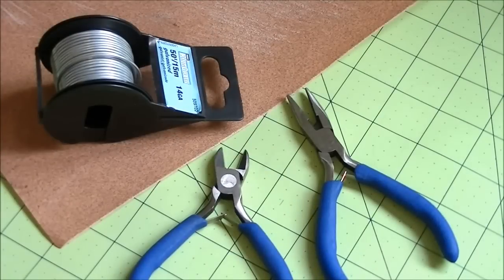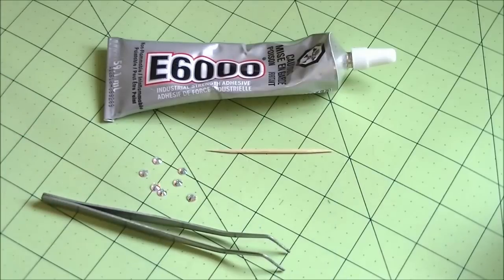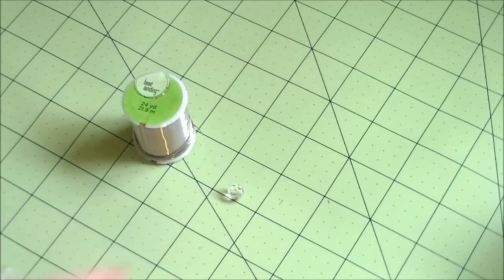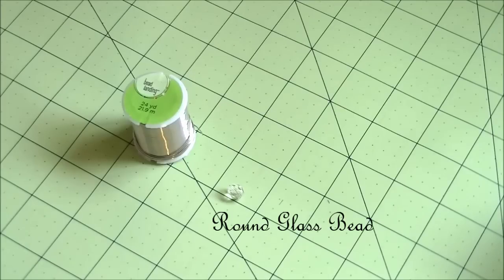To make a snake arm cuff you need 14 gauge wire, sandpaper, a wire cutter and round nose pliers and for decorating I'm going to be using rhinestones, E6000, craft tweezers, a toothpick for the first design and for the second design I'll be using 24 gauge wire and a round glass bead.